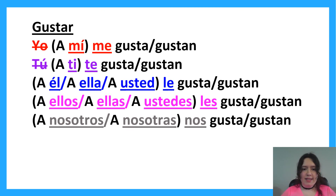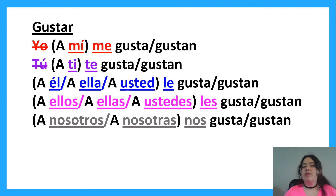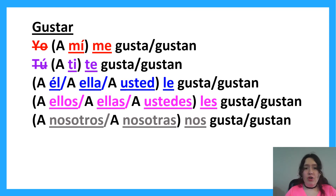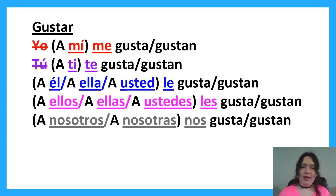Also, when saying 'I like bread,' it's 'me gusta el pan.' You need the article — it's almost like 'the bread,' but you're not going to translate it that way. That article is required after the verb gustar.